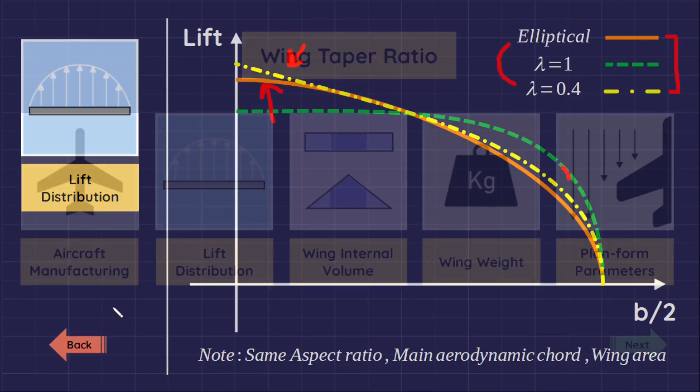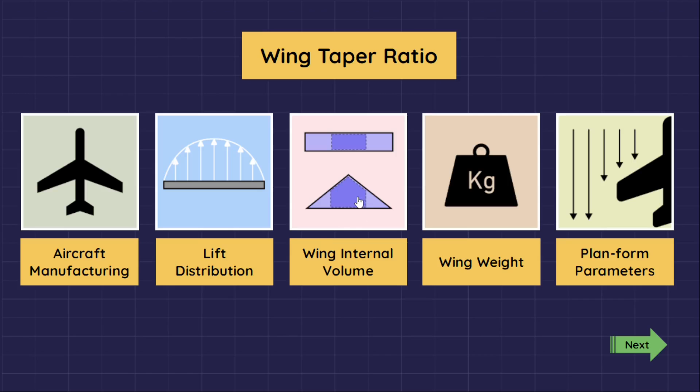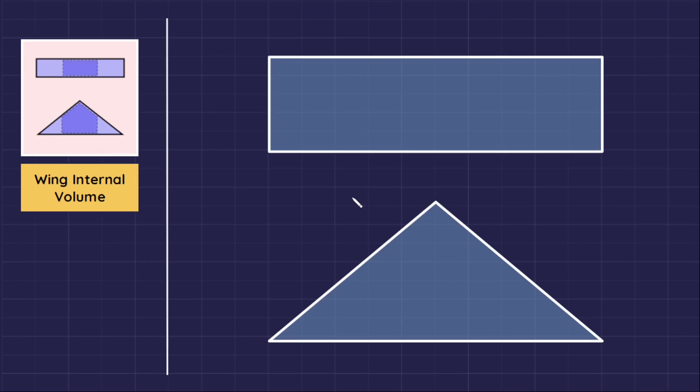Effect of taper ratio on wing internal volume. As a taper ratio decreases to zero, we will have a delta wing platform.